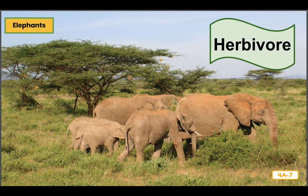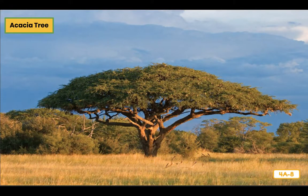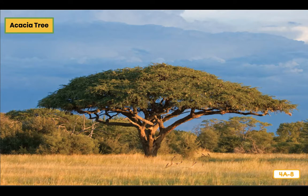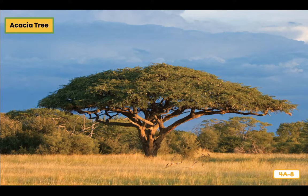Elephants eat grass, and they like acacias, too. They rest in the acacia's shade and eat the acacia's leaves, branches, and seeds. They even like to strip off the bark and chew on it. Elephants are also herbivores. The acacia tree is well adapted to its habitat: it has small leaves that don't dry out as quickly as larger leaves, roots that grow very deep into the ground to collect water from far underground when there is not much rainfall, and sharp thorns that help keep some animals from eating too many of the branches. These trees are right at home in this habitat.